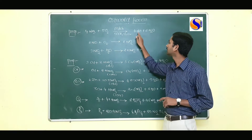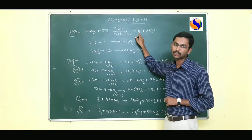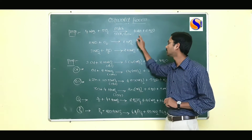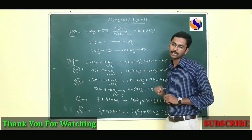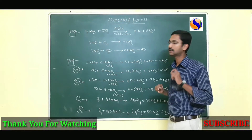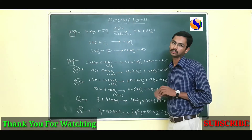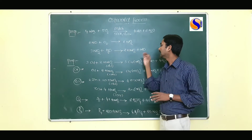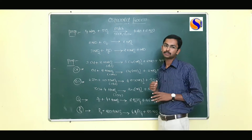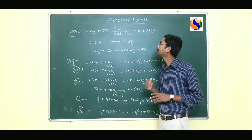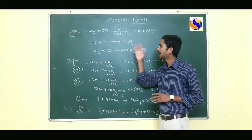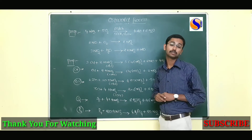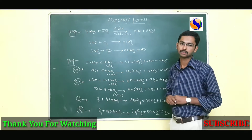Step 1: nitric oxide formation. Step 2: nitrogen dioxide formation. Step 3: HNO₃ formation. So in three steps we can prepare nitric acid in the Ostwald process.